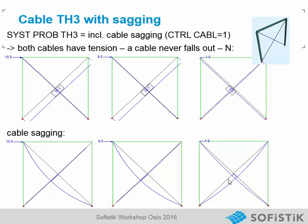And if we have the load from the right side, both cables have an inner sagging. The advantage is that no cable falls out in this analysis — all cables are always under tension. Maybe the tension is small, but a cable never falls out. This is a big advantage when you make a geometric non-linear analysis.